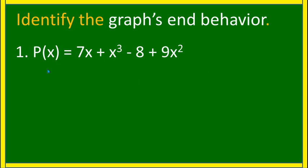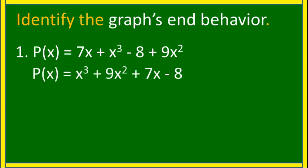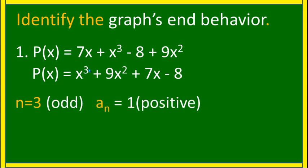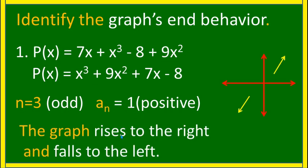Example: identify the end behavior if the given polynomial function is 7x + x³ − 8 + 9x². First, arrange it in descending powers of x and look at the leading term. The degree of the polynomial is 3, which is odd, and the leading coefficient is 1, which is positive. Therefore, the graph falls to the left and rises to the right.